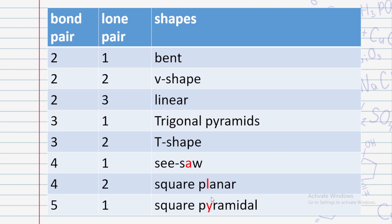After that, if there is no lone pair, the bond pairs and lone pairs determine the shape. If the lone pair count is zero — that is, no lone pair — the shape changes accordingly. What about compounds with no lone pairs?